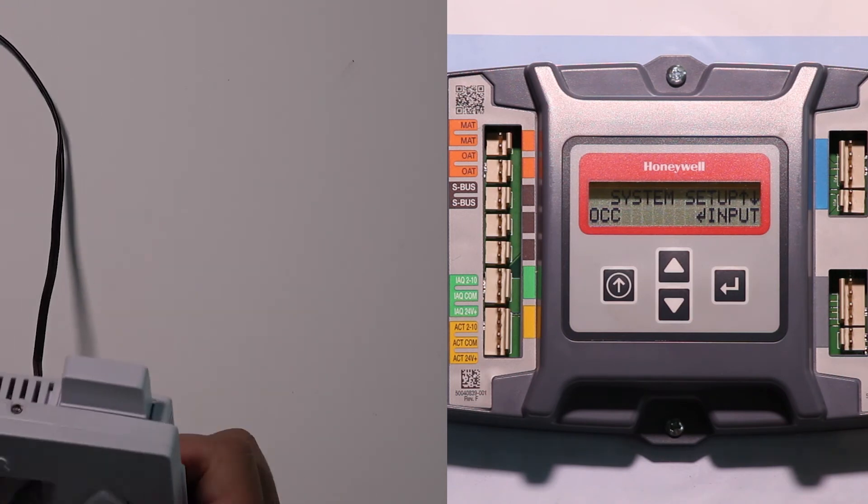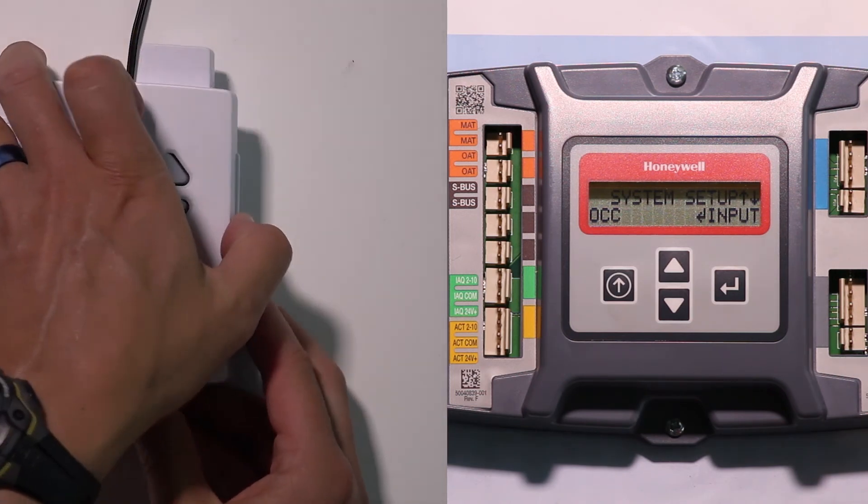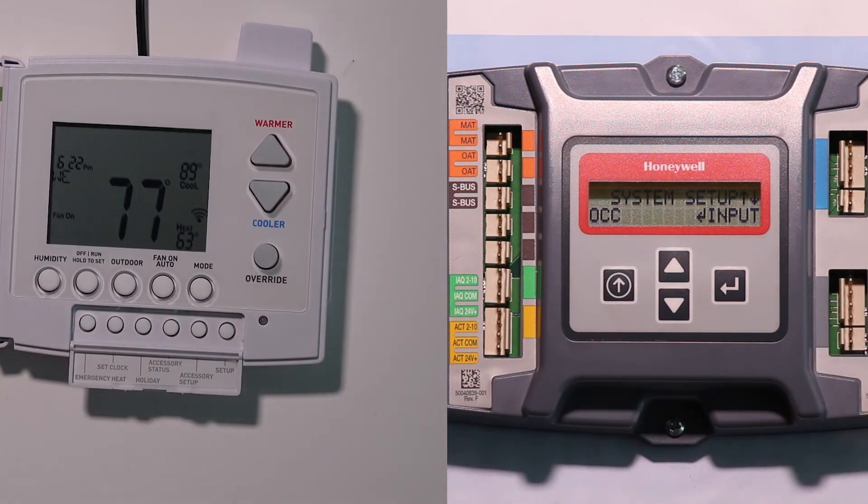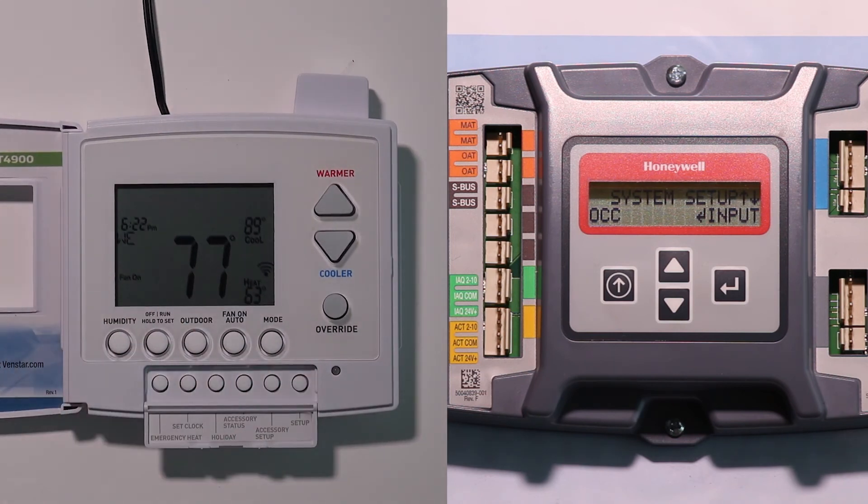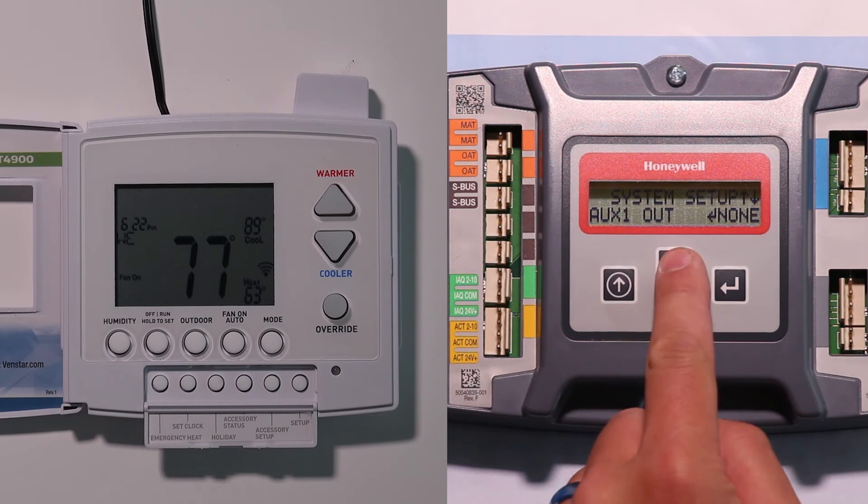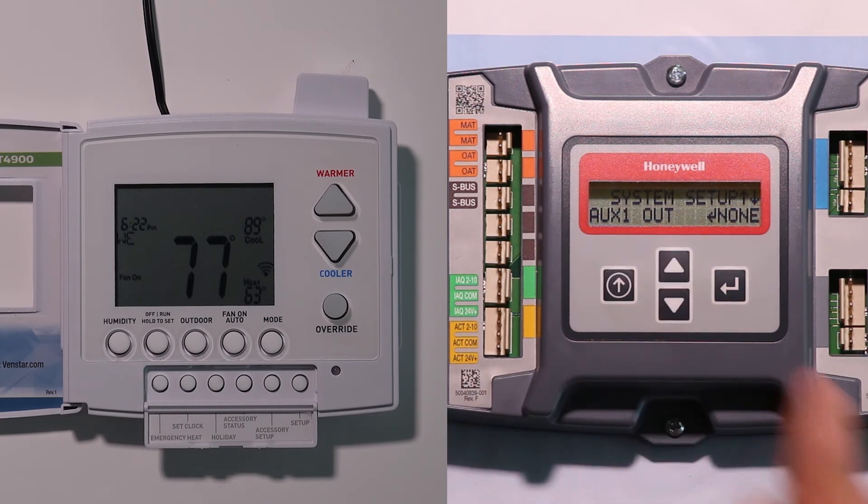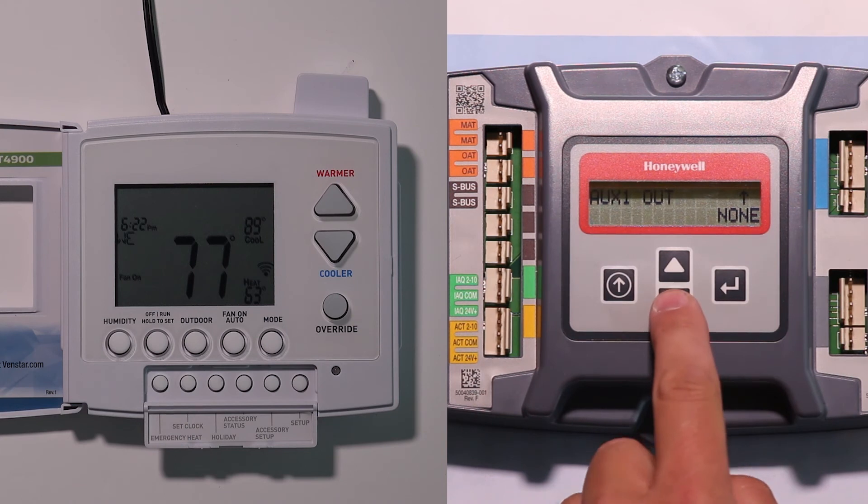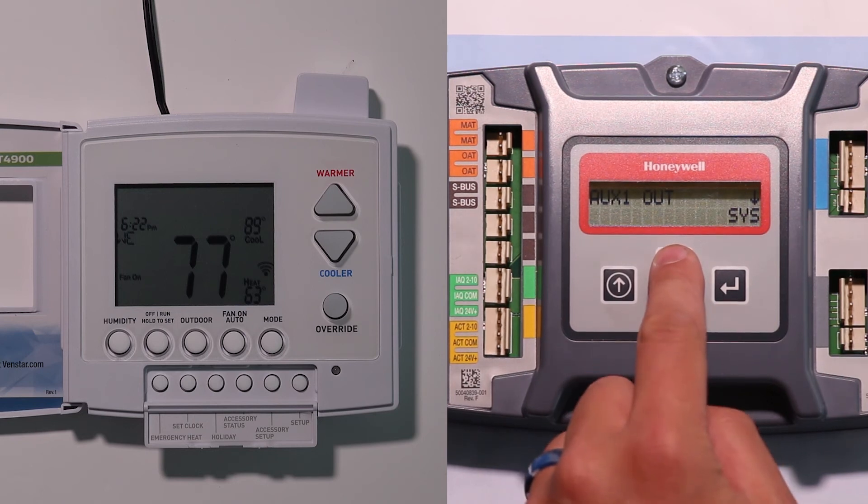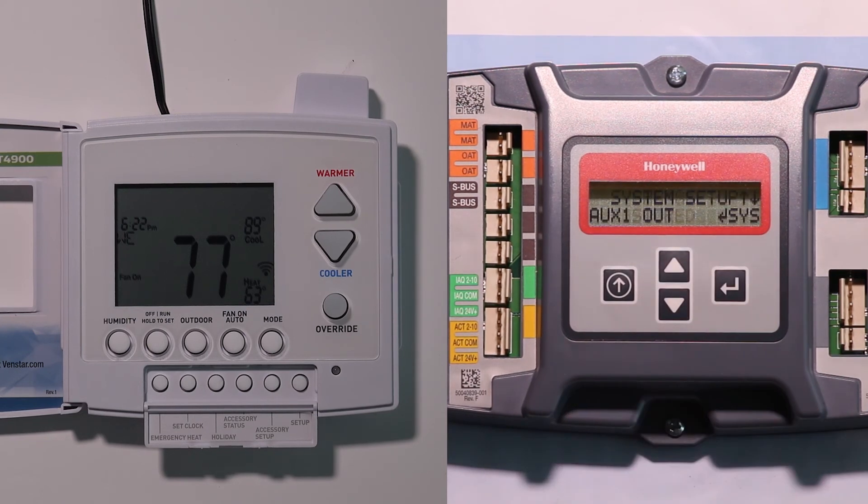So once we have these two guys wired with each other, we're going to configure them both again. So on our economizer controller, we're still under the system setup. If I go up one higher than the occupancy, I have the AUX 1 out. If I hit enter, I can change that. My choices here, as you will see, are ERV, exhaust, fan 2, or system. I'm going to pick system and save that. What that does is it sends out any system alarms from the economizer controller out on that AUX 1 output signal.